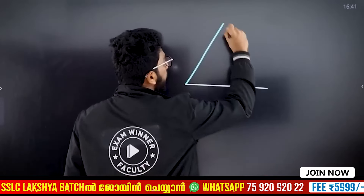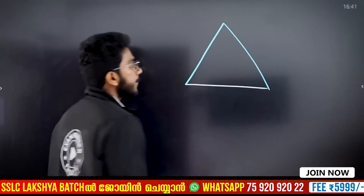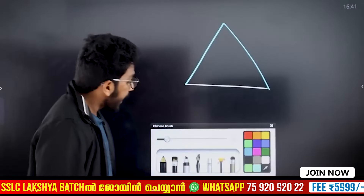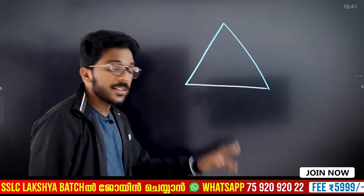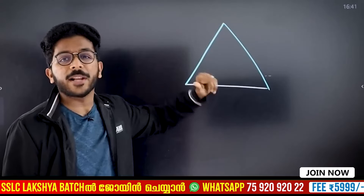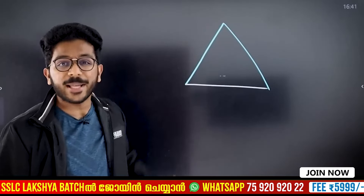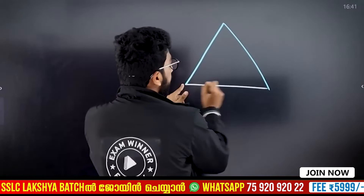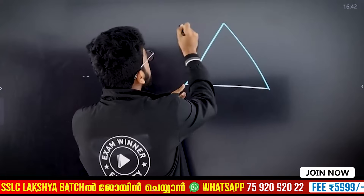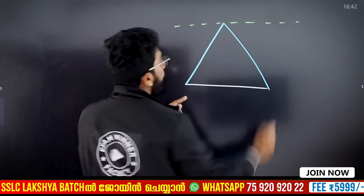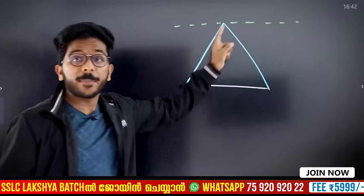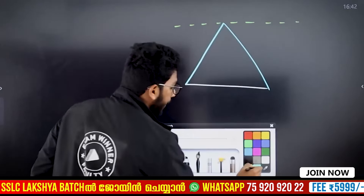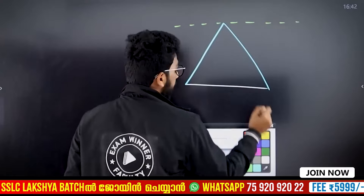It's a base. It's a triangle. Now, if you have the same triangle with the third point, the same base is the third point. Where are the three points? The parallel line.